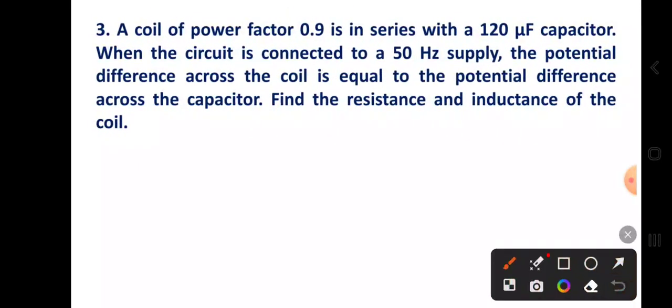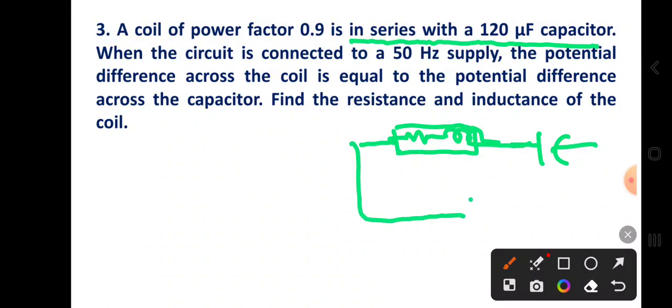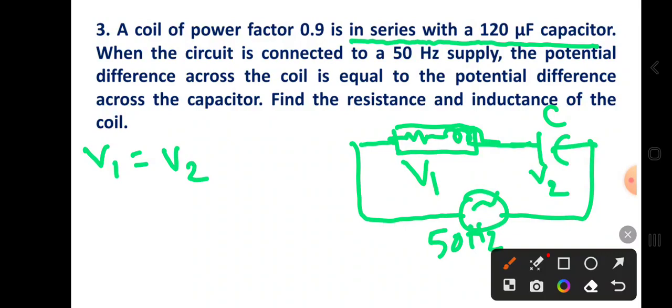The coil containing resistor and inductance is connected in series with the capacitance. When the circuit is connected to 50 Hz supply, the potential difference across the coil equals the potential difference across the capacitor. That means if V1 is the voltage across the coil and V2 is across the capacitor, V1 = V2. We need to find the resistance and inductance.